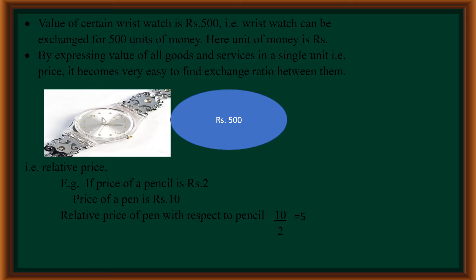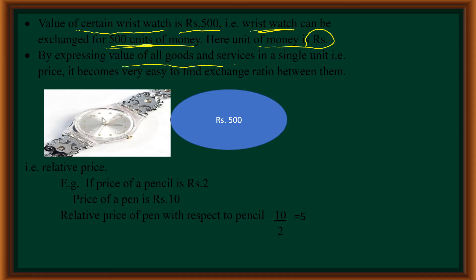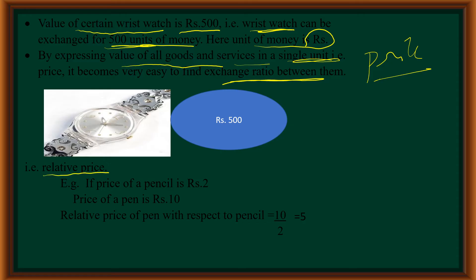Here you can see the value of a wristwatch is 500 rupees. It means that with 500 rupees, or 500 units of money, you can buy or exchange for a wristwatch. Here the unit of money is rupees. By expressing the value of all goods and services in a single unit — that is, price — it becomes very easy for us to find out the exchange ratio or relative prices between those two goods.